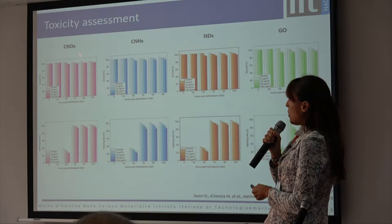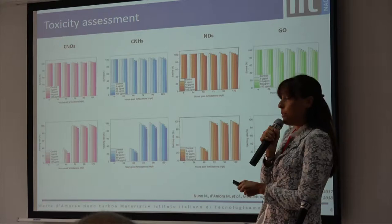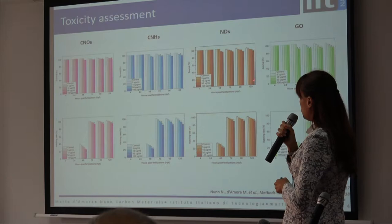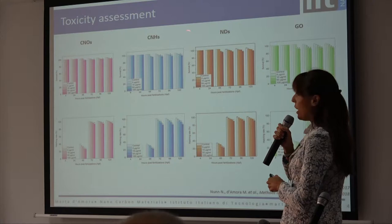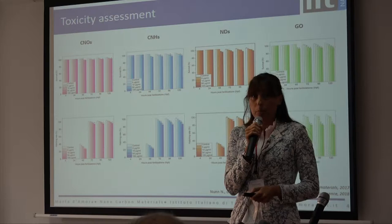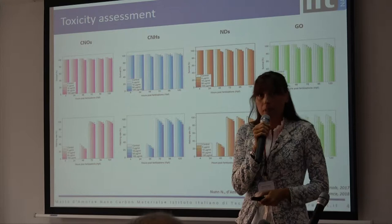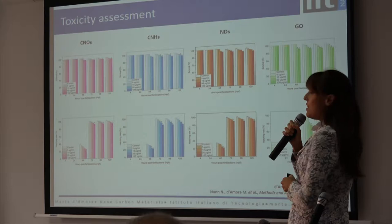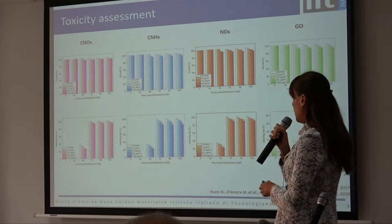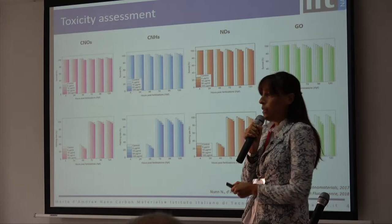The survival rate of carbon nanodots, carbon nanohorns, and nanodiamonds presents a concentration-dependent behavior, as you can see from the plot. For instance, at the higher concentration, the survival rate of carbon nanodots, carbon nanohorns, and nanodiamonds decreased from 100% to 95%, 94%, and 92% respectively. On the other hand, graphene oxide presents a significant decrease in survival rate between 72 and 120 hours post-fertilization, at the higher concentrations of 50 and 100 micrograms per ml.